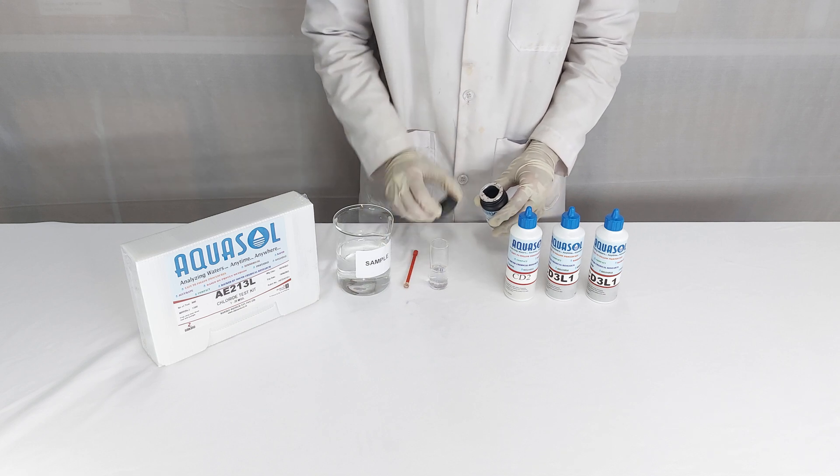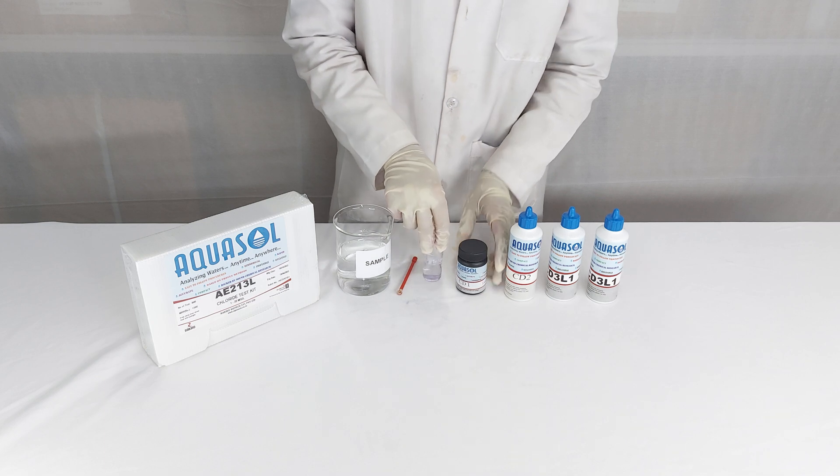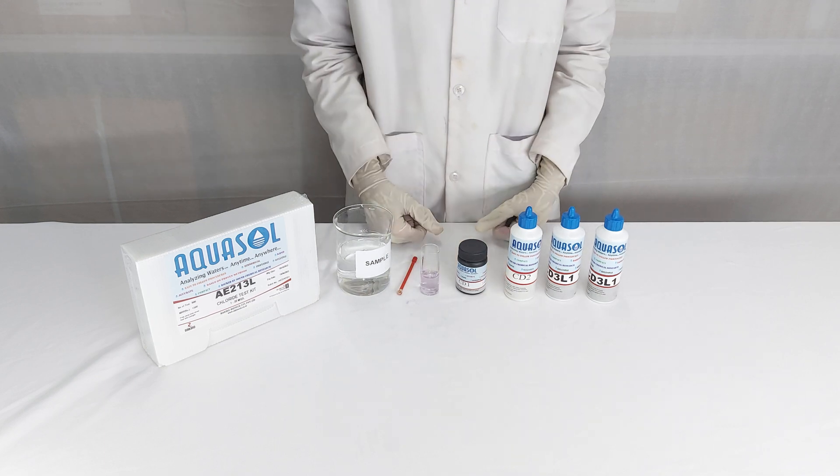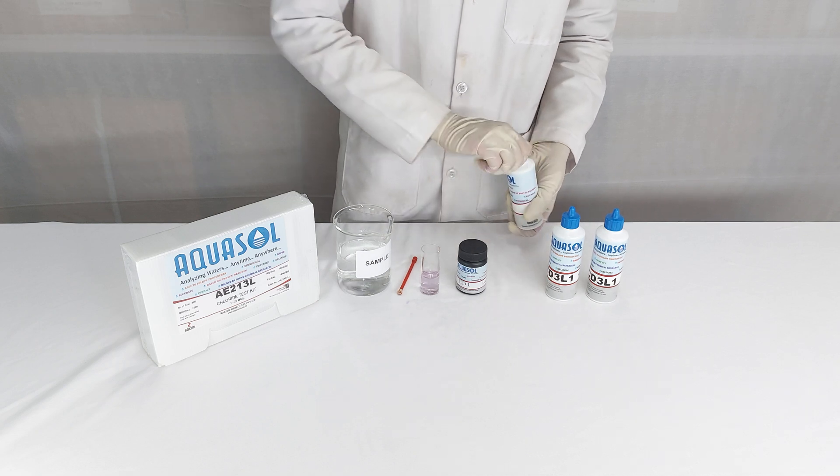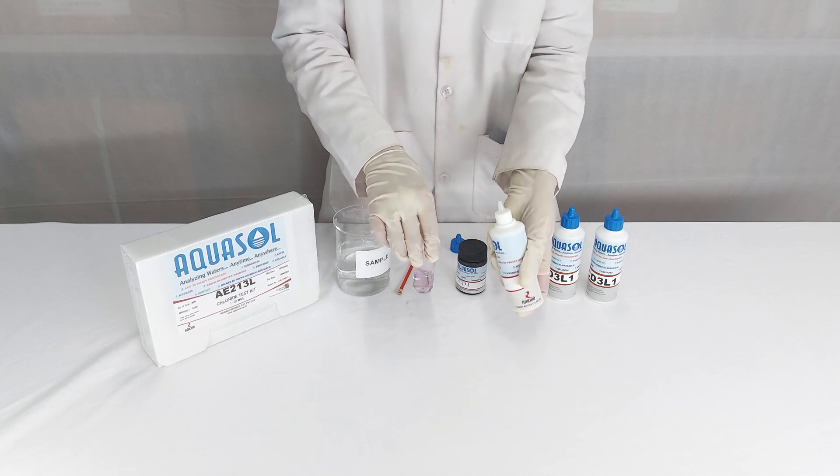Then close the bottle tightly. Mix the sample well to dissolve. Now add CD2 reagent dropwise until the sample turns yellow.